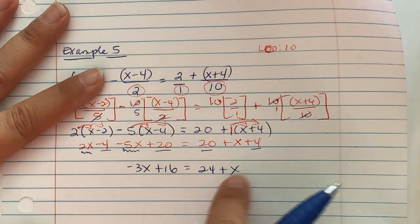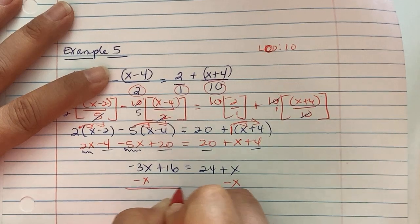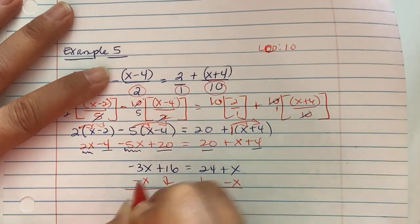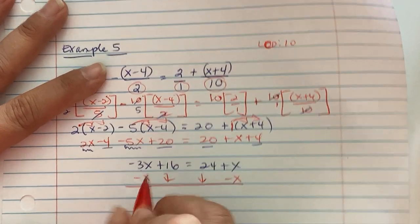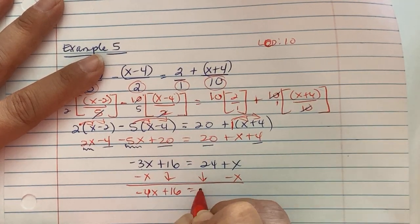Crossing that bridge, so we're going to combine our x's to the left. Positive x, I'm subtracting it over. So short 3x and I spend another x, I'm short 4 of them, plus 16 equals 24.